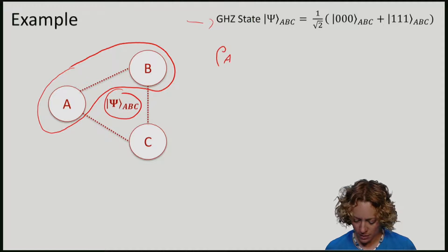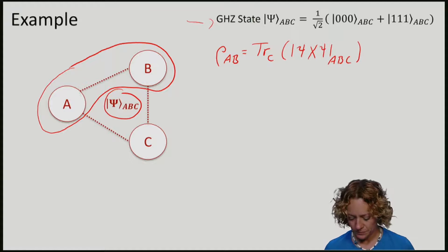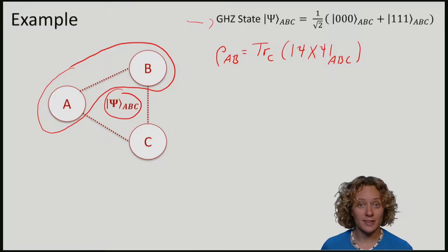So rho AB is the reduced state. We will trace out C from the state on ABC. So if we do this calculation,